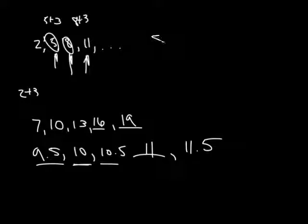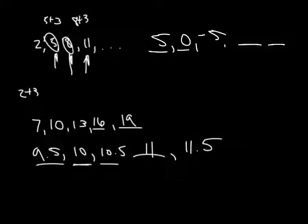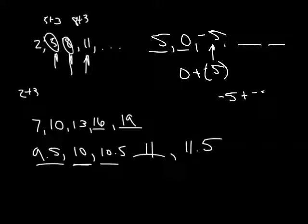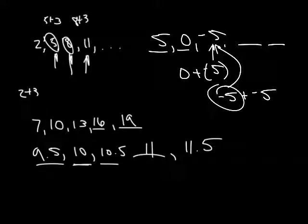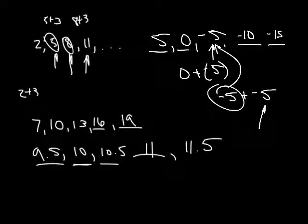In example 14c, given 5, 0, negative 5, find the next two numbers. From 5 to 0 we added negative 5. From 0 to negative 5, we again add negative 5. From negative 5 plus negative 5 we get negative 10. Then negative 10 plus negative 5 gives negative 15. So the sequence is 5, 0, negative 5, negative 10, negative 15.